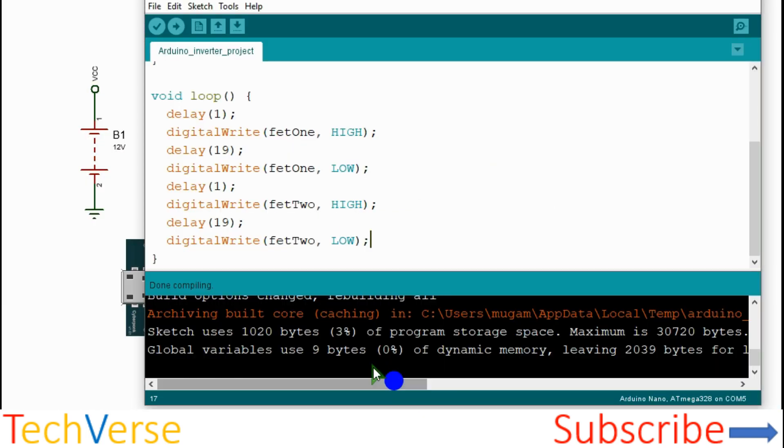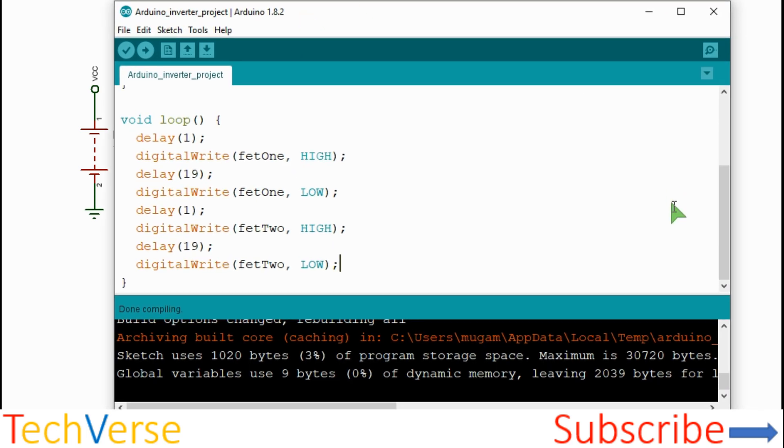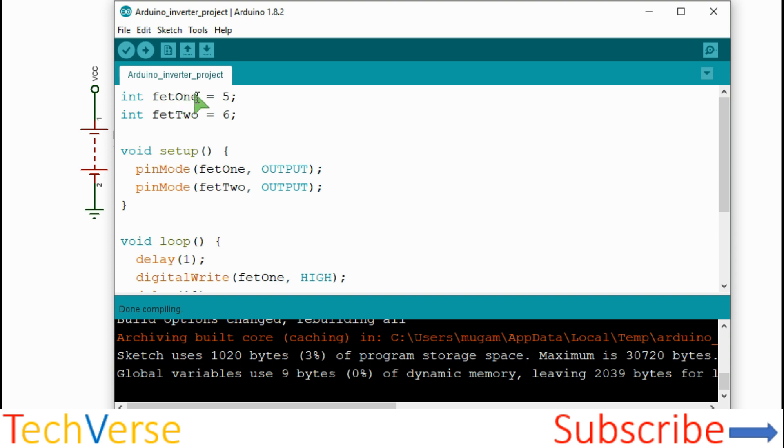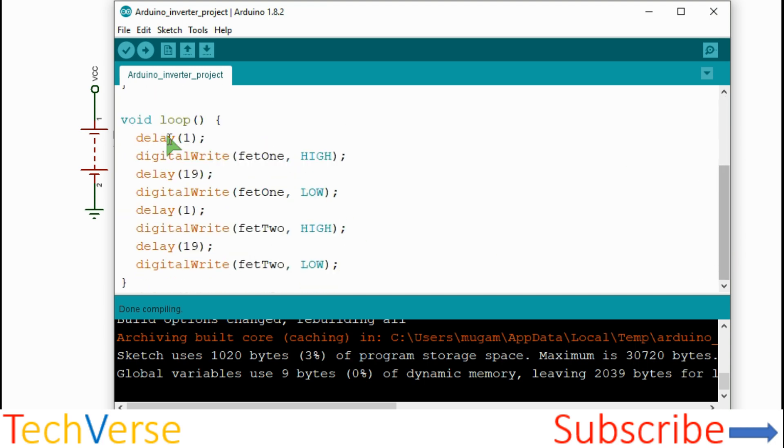So this is the simple Arduino code. We begin by declaring the gate drive pins, digital pin 5 and 6. Then in the setup you set both pins as output. Then in the loop you produce a delay of one millisecond, then write the first gate high. This will turn on the first MOSFET.